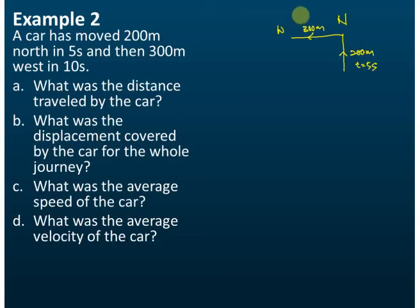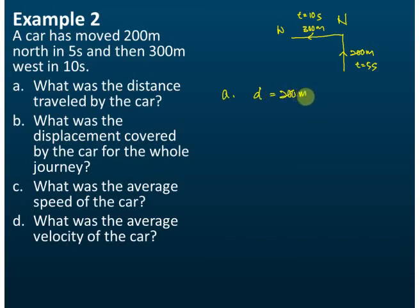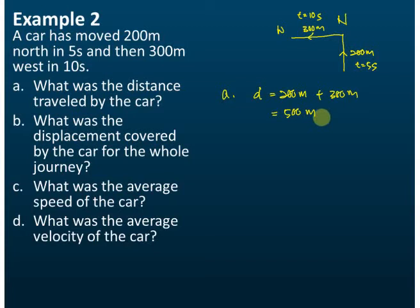And for the 300 meters, the time taken is equal to 10 seconds. For part A, what was the distance traveled by the car? The distance traveled is obviously equal to 200 meters plus 300 meters, because distance equals the sum of the length of the path traveled by the object. So it's 500 meters. Usually students will have no problem with this.